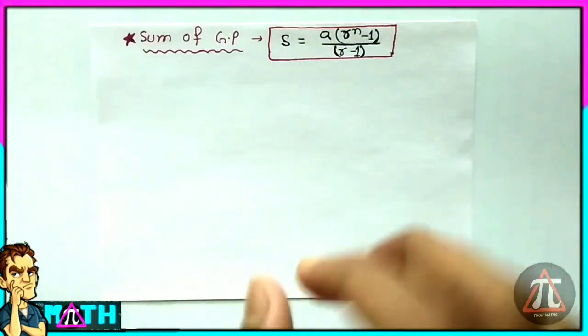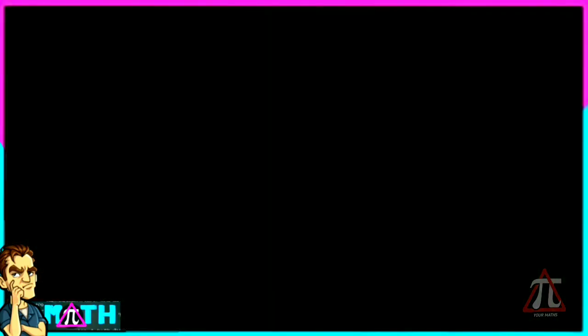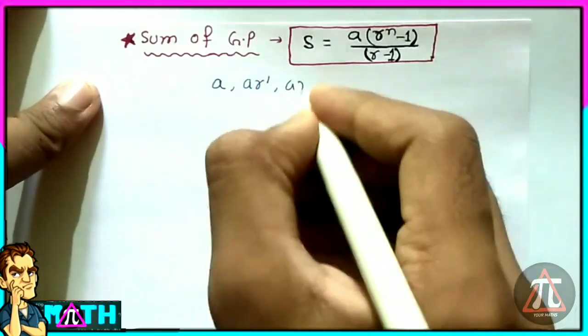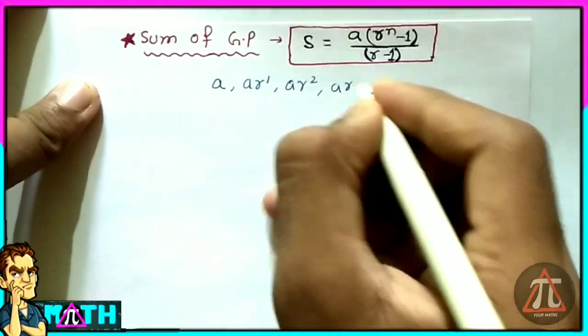Welcome to your math class. I've got a new problem. Let's prove some formulas of GP. A geometric progression is something like a, ar to the power 1, ar to the power 2, and its terms go...